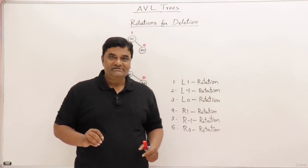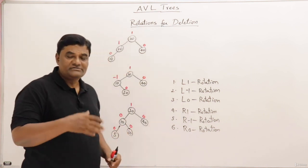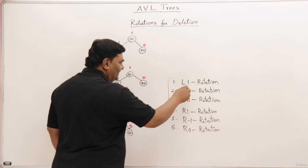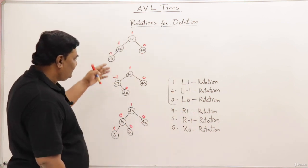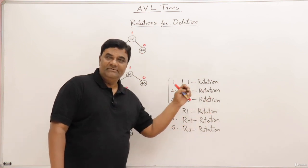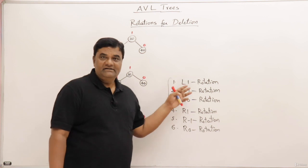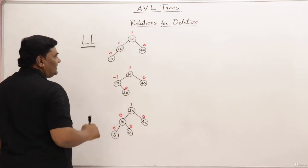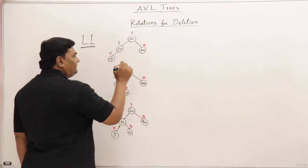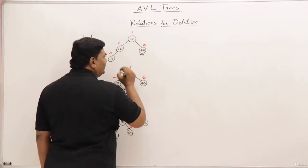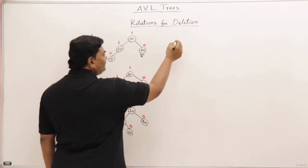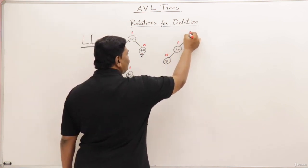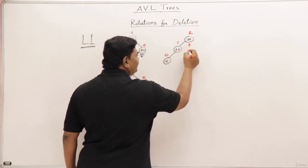We will first learn about three rotations: L1, L-1, and L0. Then we will see R1, R-1, and R0. For L1 rotation, look at this example carefully. Suppose I am deleting node 4T — after deletion, the tree looks like this. The balance factors become 0, 1, and this node becomes 2, so this node became imbalanced.